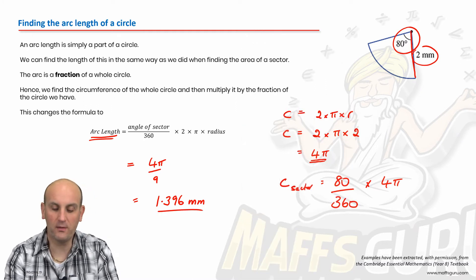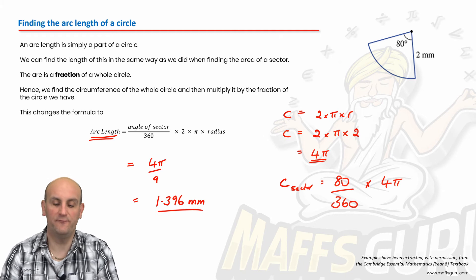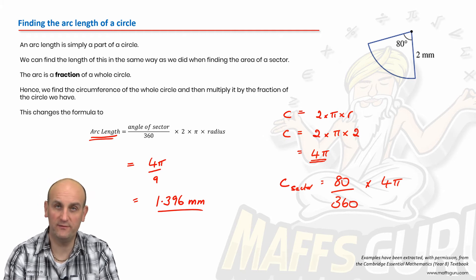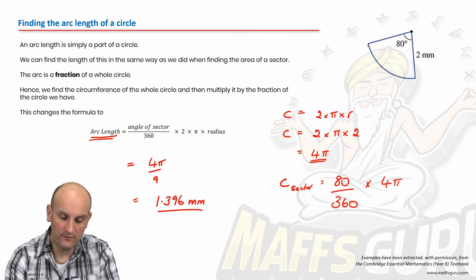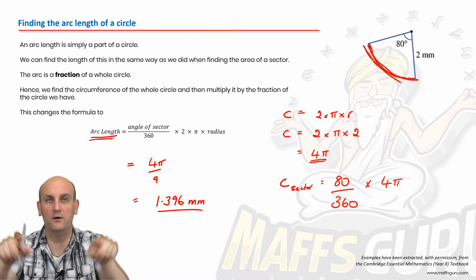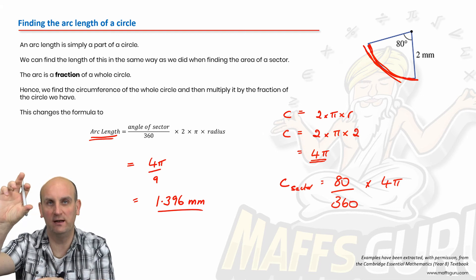So they're telling me the arc length for that circle is 4 pi on 9. Or if I tap that and go back to decimal again and hit enter, it also gives me 1.396 millimeters.